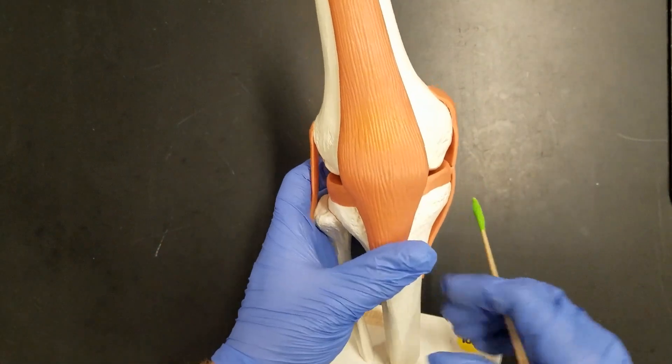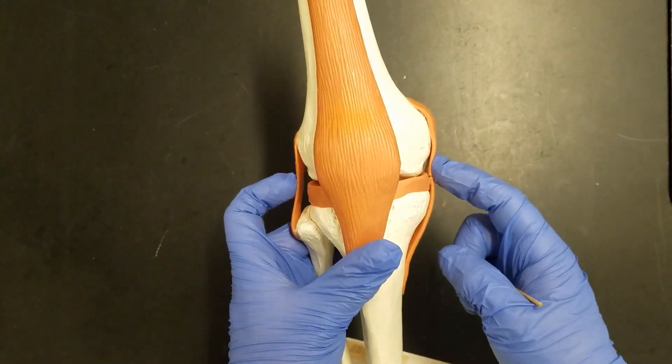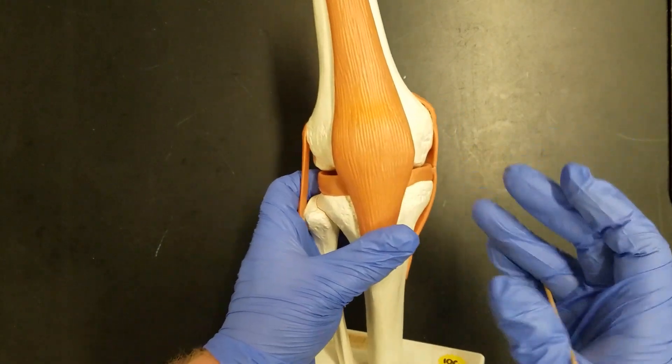On the sides of the knee we have our collateral ligaments. Collateral simply means on both sides.